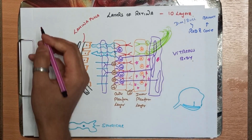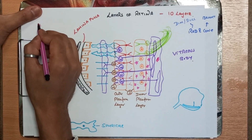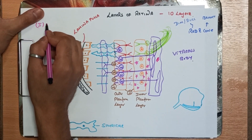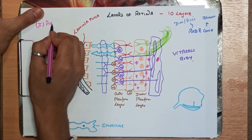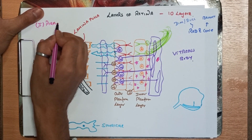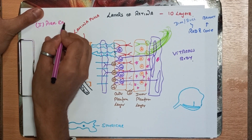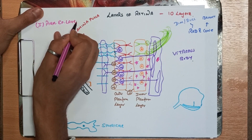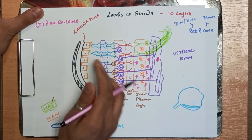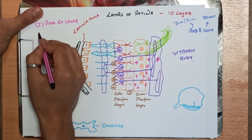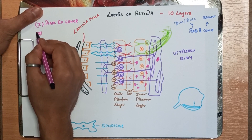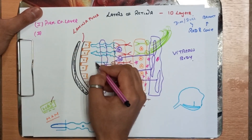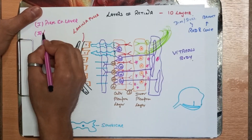The first layer is the pigmented epithelial layer. The second layer is the layer of rod and cone cells.